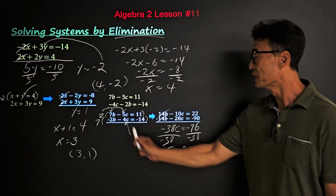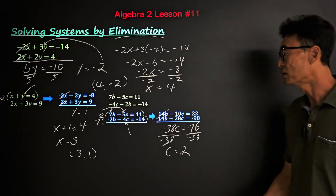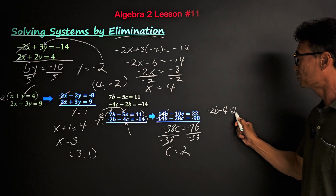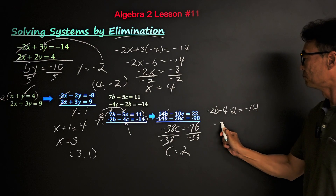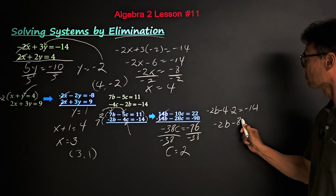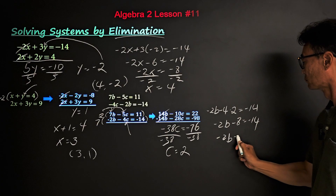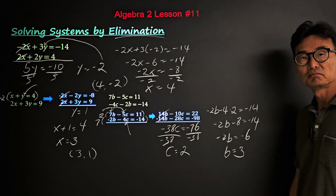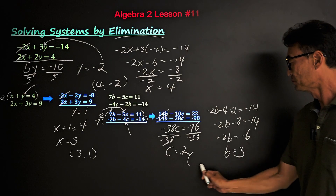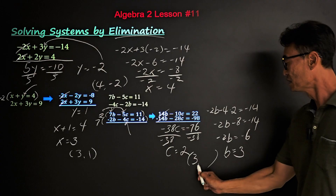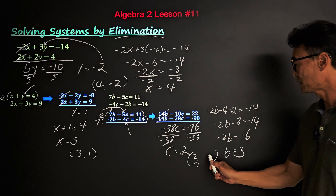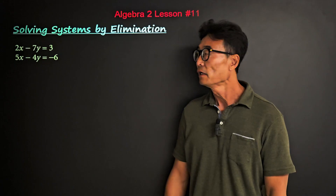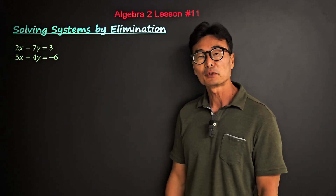We take c equals 2 and plug it into the equation, getting negative 2b minus 4 times 2 equals negative 14. Solving gives b equals 3. The final answer is b equals 3 and c equals 2.